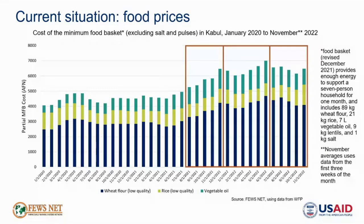This chart shows trends in retail prices of wheat flour, rice, and vegetable oil — three key staple food commodities that make up the majority of the minimum food basket — in Kabul from January 2020 to November 2022. The first red box shows the increase in prices following the Taliban takeover in the latter half of 2021. The second box shows the first half of 2022, when a slight decline in food prices alongside currency recovery was followed by further food price increases largely due to rising fuel prices and rising global food prices. The third box shows the rest of 2022, when prices declined with the wheat harvest and declining global cooking oil prices.